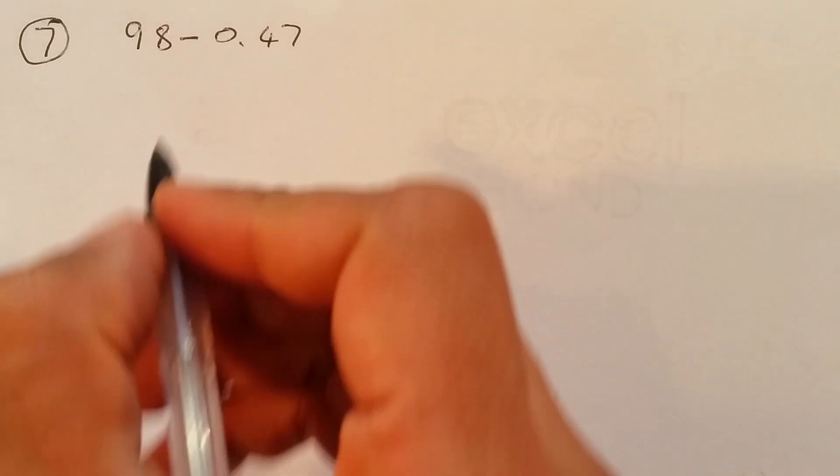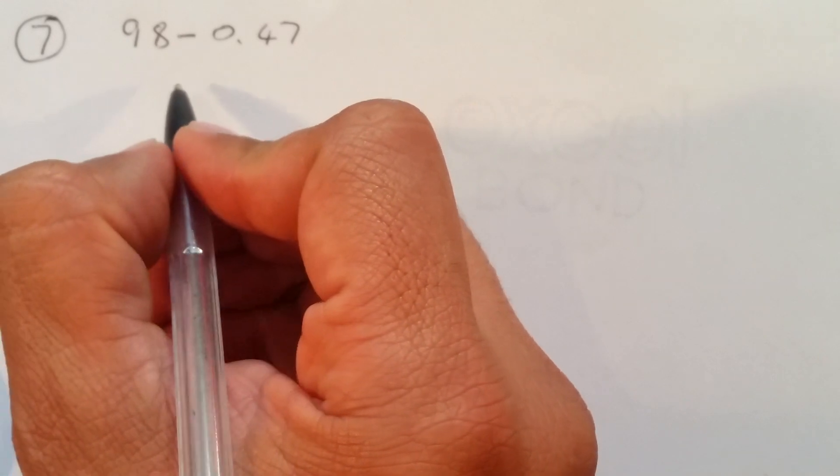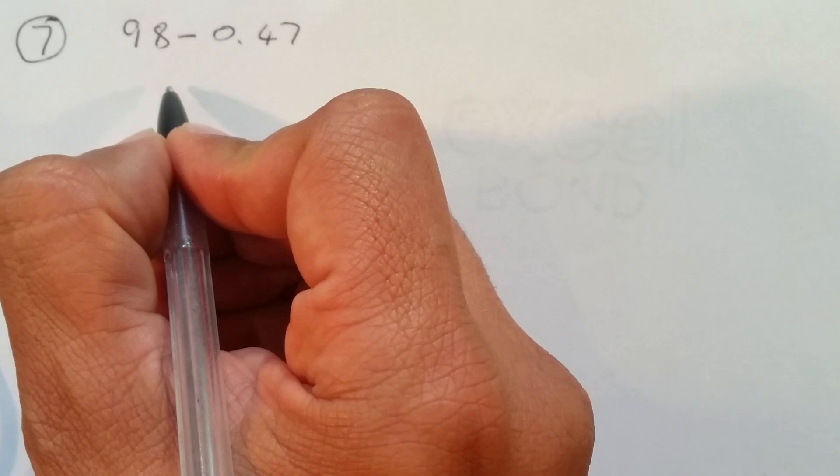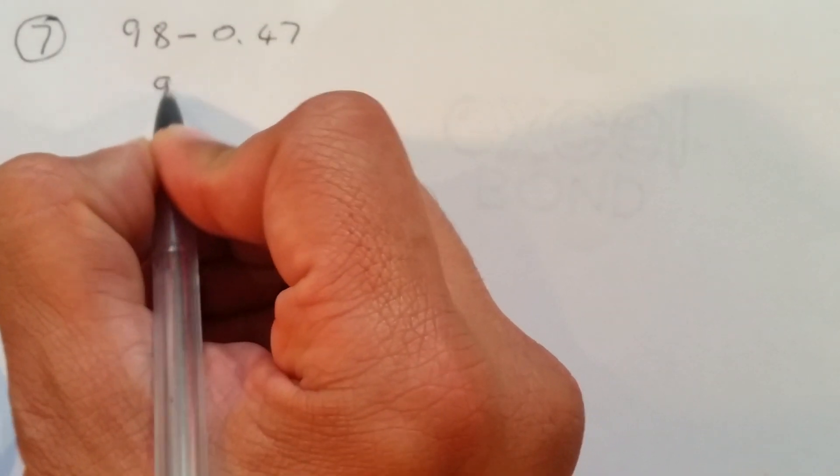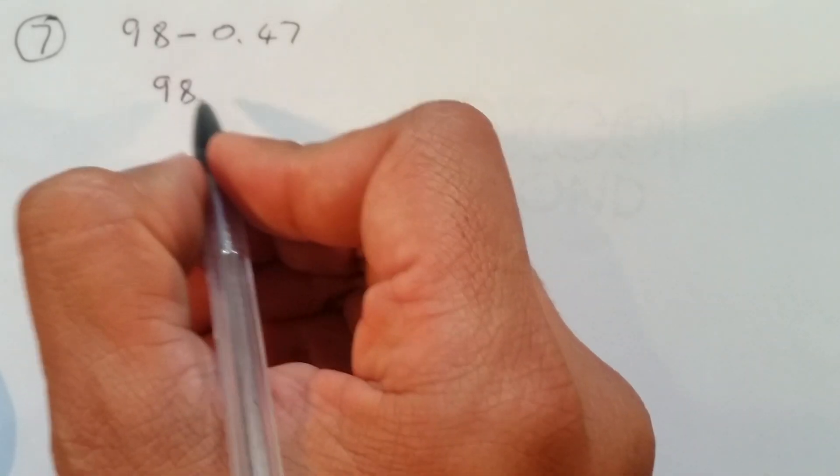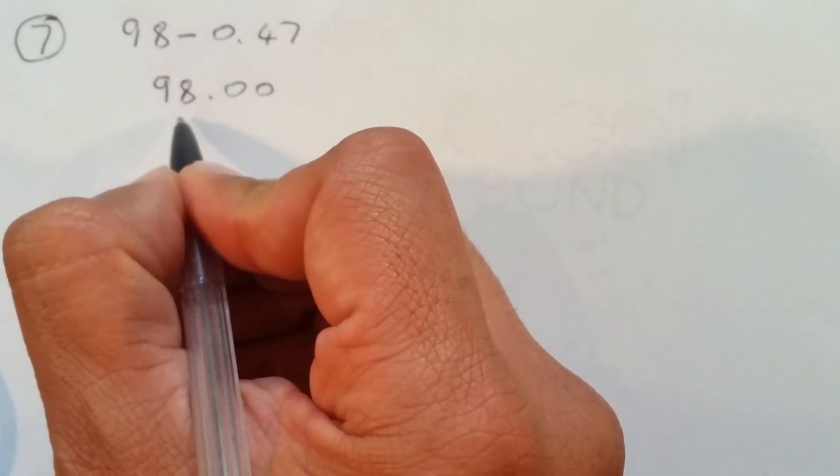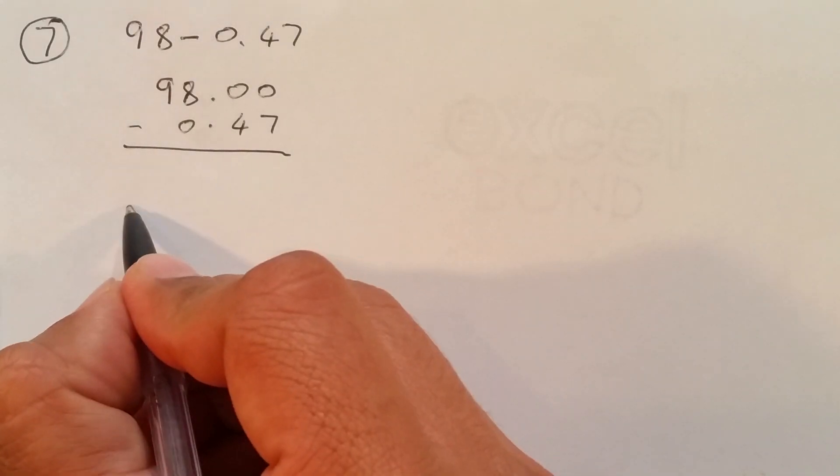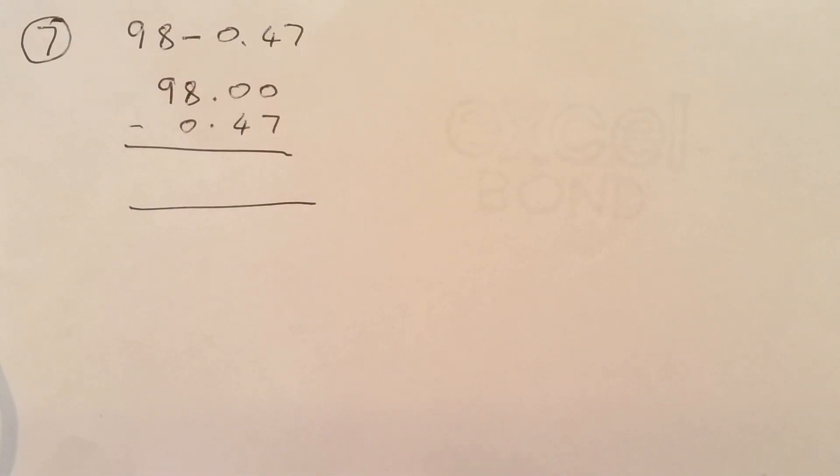The next one is the subtraction question. If you see that, which is 98 minus 0.47. So what we'll do, again, exactly the same thing we will do. We'll write, obviously, we have to write down 19 on top, which is 98 on top, sorry, 98.00. 0.47. So, make sure decimal under decimal, exactly the same alignment like what we did in addition. Addition supply should be exactly the same way.